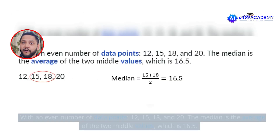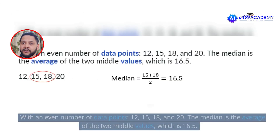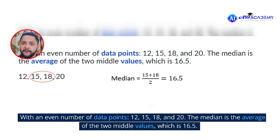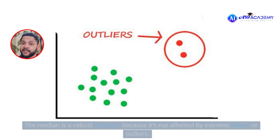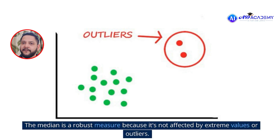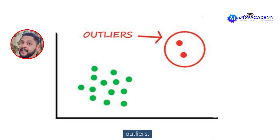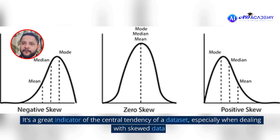In the case of an even number of data points, like 12, 15, 18, and 20, the middle values are 15 and 18, whose average is 16.5, which is the median. Median is robust because it is not affected by extreme values or outliers, and it is an indicator of central tendency especially when dealing with skewness in data.